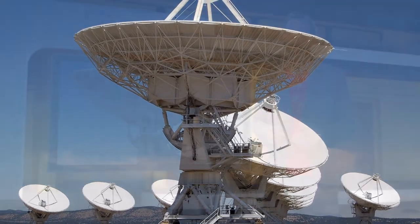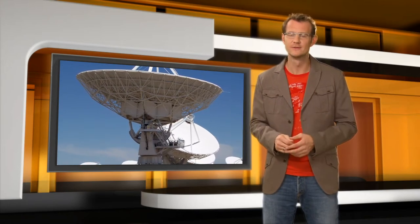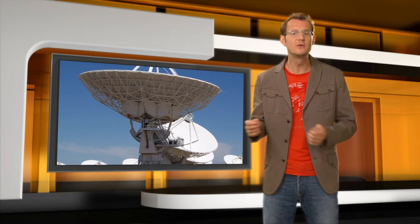The very large array in New Mexico, for example, consists of 27 separate antennas, each measuring 25 meters across. Now, each antenna can be moved around individually. And in its most extended configuration, the virtual dish mimicked by the array measures 36 kilometers across.